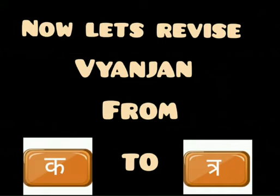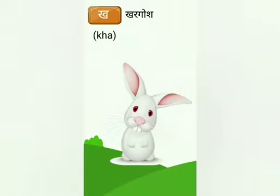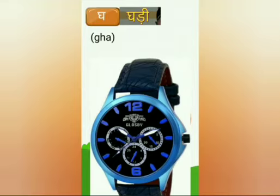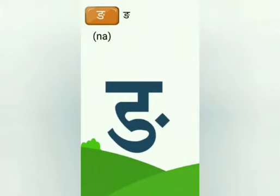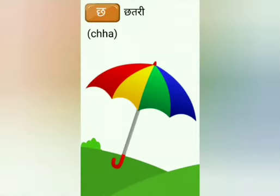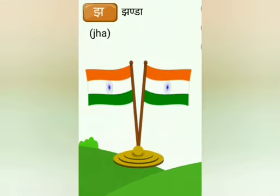So, now let's revise Vyanjan from Ka to Tra. Ka se Kamal, Ka se Khargosh, Ga se Gamla, Ga se Ghari. Anga, Anga matlab Kali. Cha se Chamach, Cha se Chhatri, Cha se Jag, Cha se Chanda.